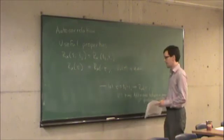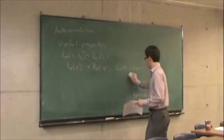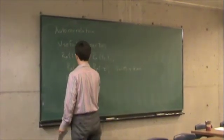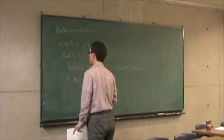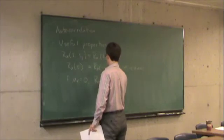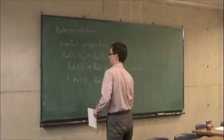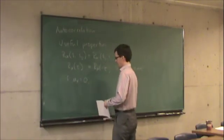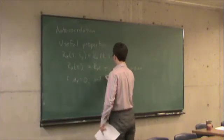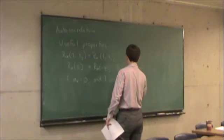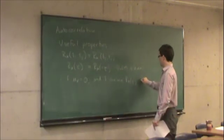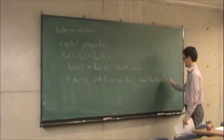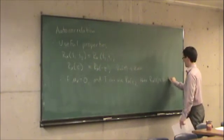OK. Another thing. So if the mean is zero, then Rx, and this is true, and I can write, and I can use Rx of tau. Then Rx of zero is equal to the variance of the process X of T.